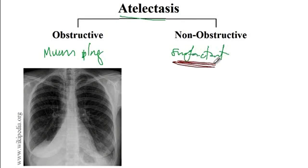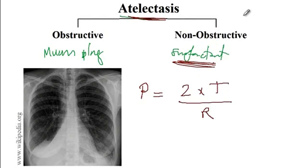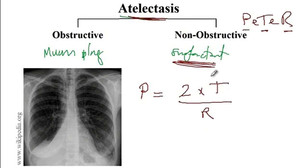Surfactant is very important in preventing atelectasis. The collapsing pressure of the lung equals 2 times surface tension divided by the radius — the mnemonic is P = 2T/R ("Peter"). Conditions that increase tension, like lack of surfactant, increase collapsing pressure and thus the risk of atelectasis. For instance, premature infants have low surfactant levels, putting them at increased risk of atelectasis and neonatal respiratory distress syndrome.